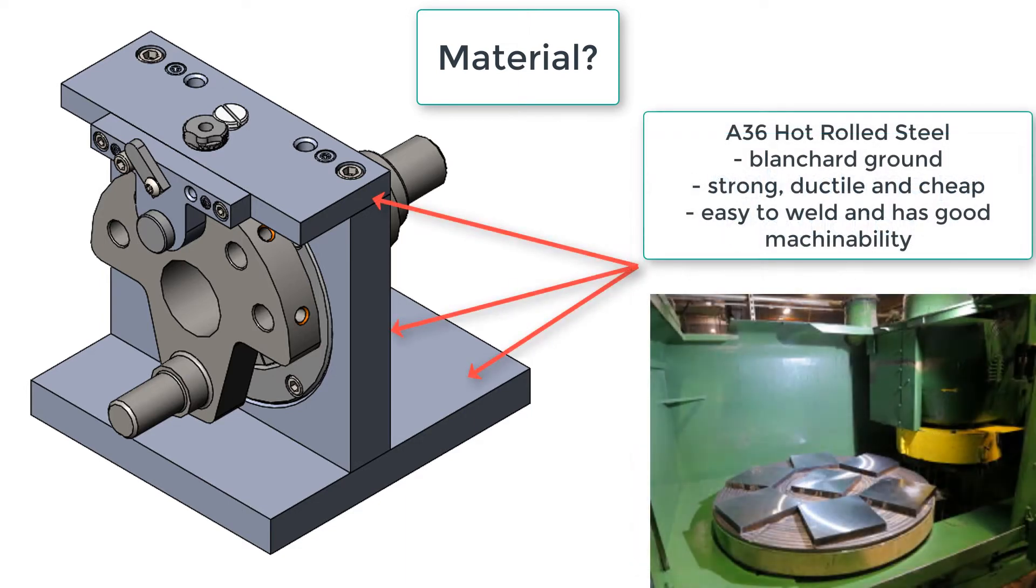And for those jig or fixture parts which do not come in direct contact with the part being machined, mild steel or sometimes aluminum is typically used.